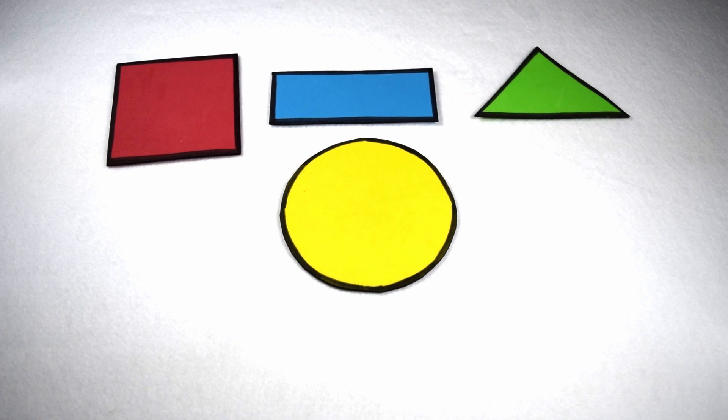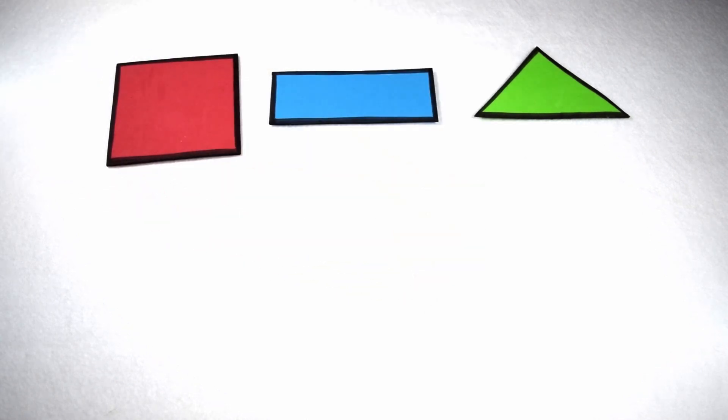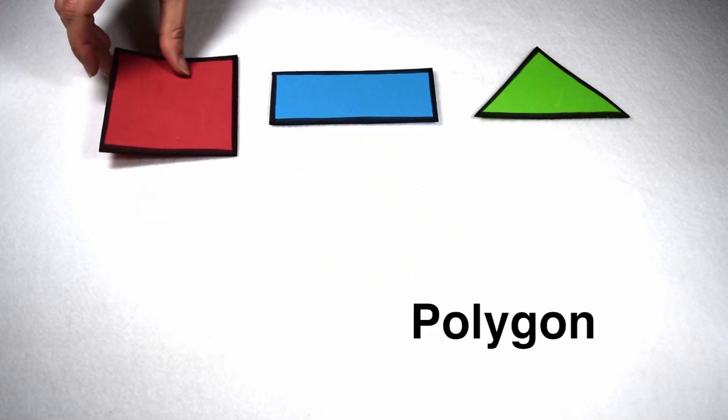When most of us hear the word shapes, we tend to think of things like squares, rectangles, triangles, and circles. Except for the circle, all of our other shapes can be described using one word, and that one word is polygon.